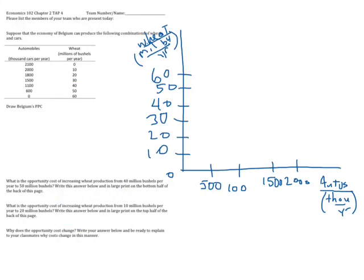And then now it's a matter of scaling these points roughly. First, let's do the end point. When automobiles are at zero, wheat is at 60, so that's zero and 60 right here, that's one point.